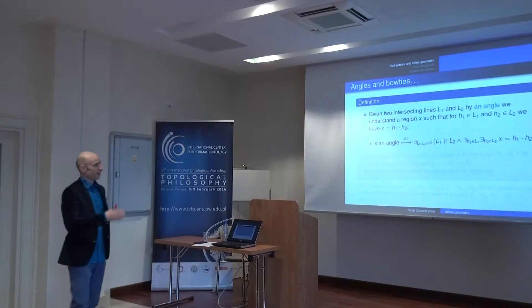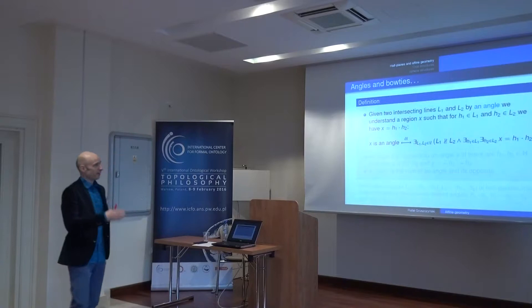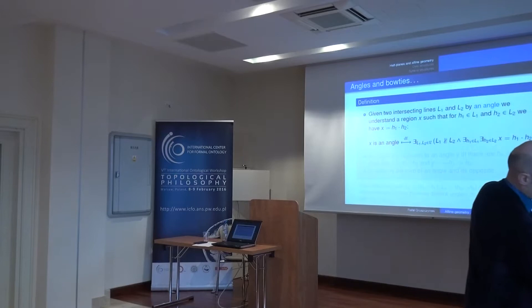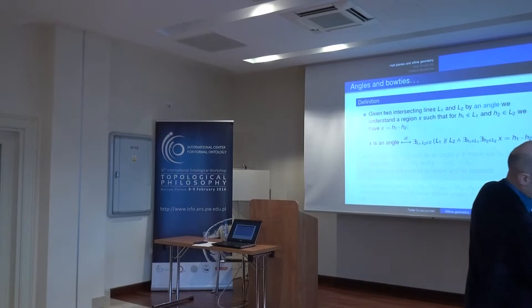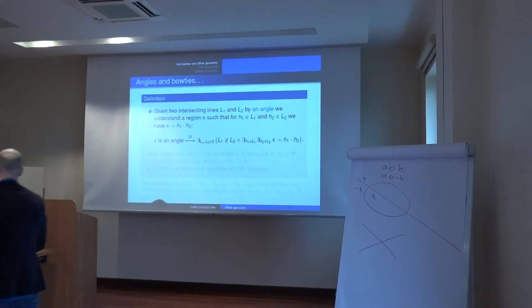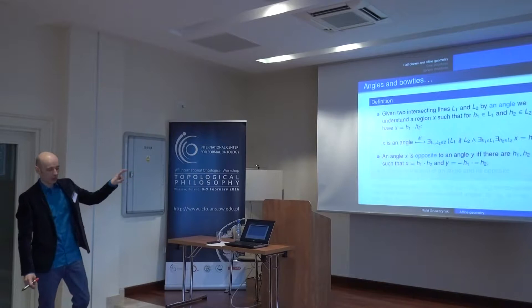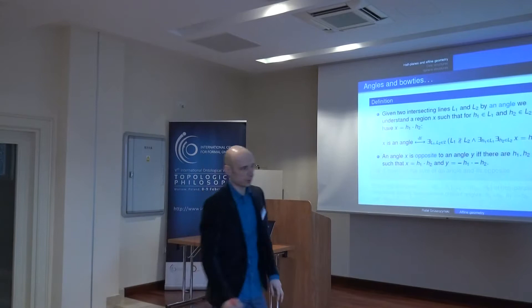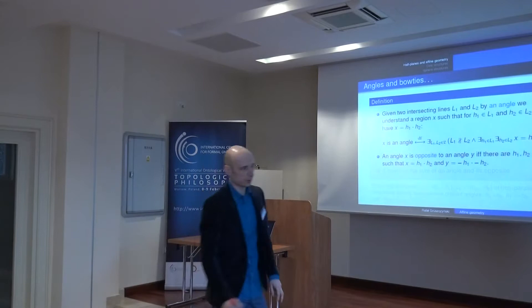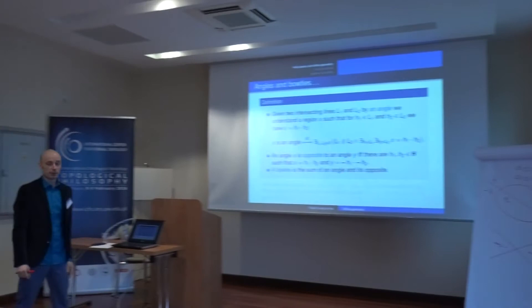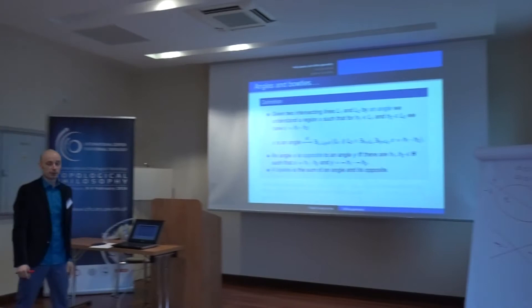If we have two intersecting lines, we define the notion of an angle, which is any one of the four areas determined by those lines. An angle is opposite to another if it is the product of the complements of the respective half-planes. A bowtie is the sum of two opposite angles.